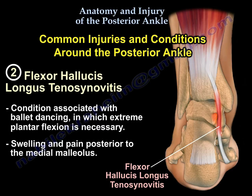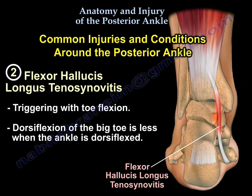The second posterior ankle condition is flexor hallucis longus tenosynovitis. It is associated with ballet dancing, in which extreme plantar flexion is necessary. The patient will have swelling and pain posterior to the medial malleolus, triggering with toe flexion, and reduced dorsiflexion of the big toe when the ankle is dorsiflexed.